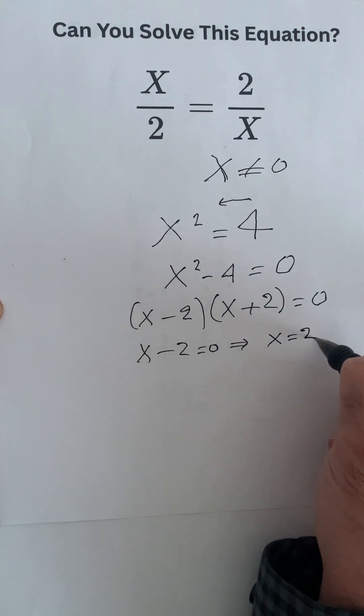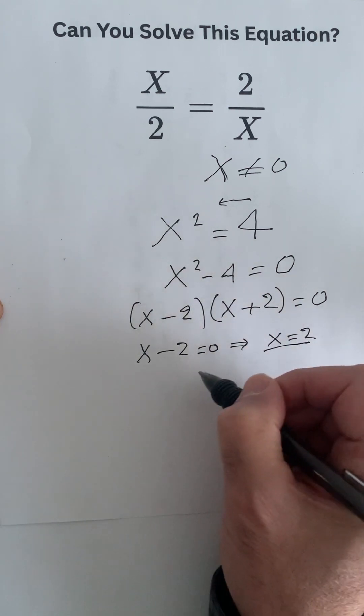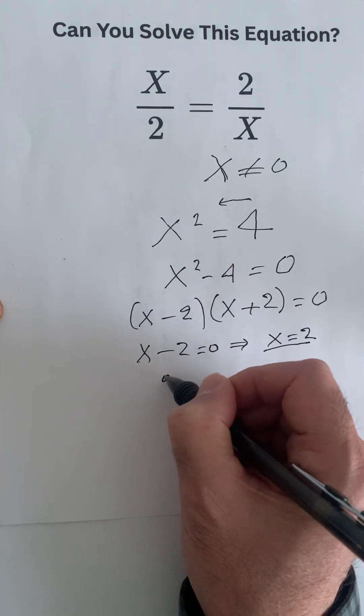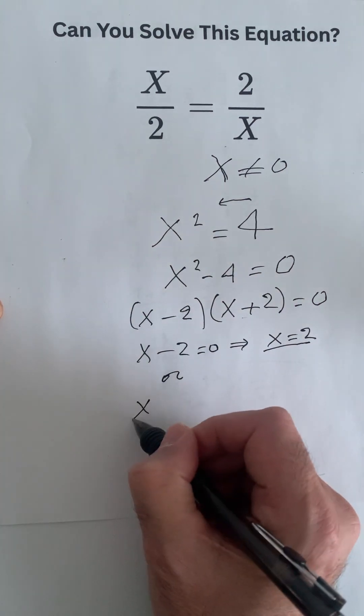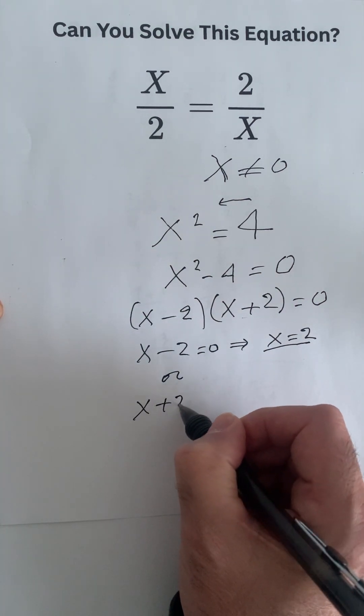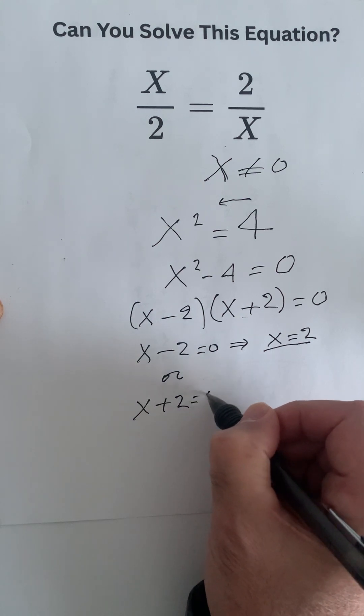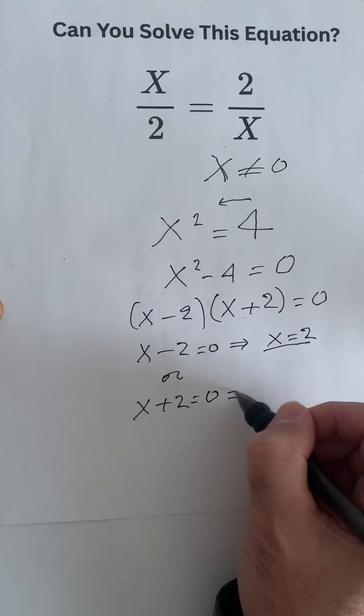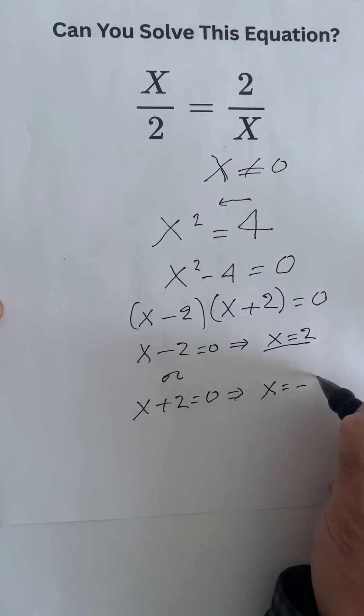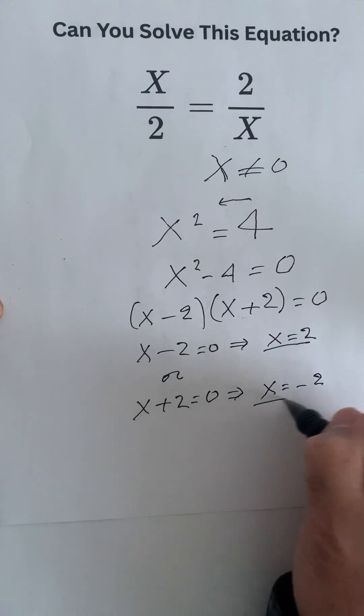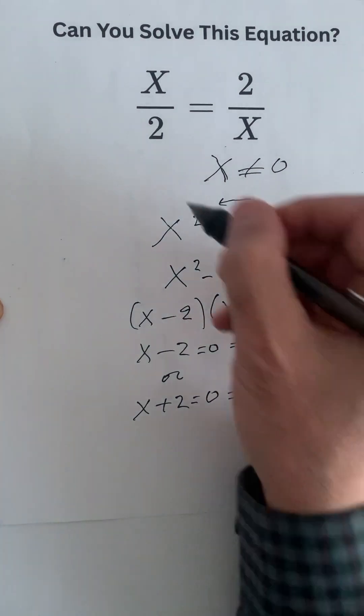Then we can also have x plus 2 equals 0, and in this case x will be equals minus 2. And in this case we have found the two solutions to the initial question that we have. Thank you.